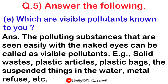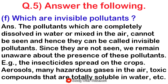Next question: which are visual pollutants known to you? Answer: the polluting substances that are seen easily with the naked eye can be called visual pollutants. Examples: solid waste, plastic articles, plastic bags, suspended things in the water, metal refuse, etc.